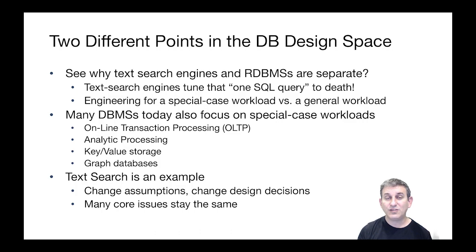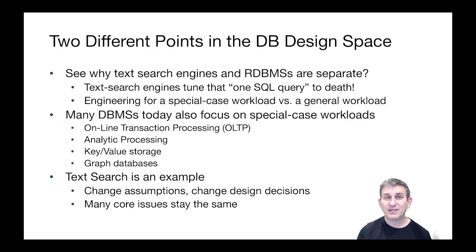Even in the relational space, it's often the case that there's not just one relational engine that does everything well. You might use one kind of relational engine for transaction processing, what's called OLTP — online transaction processing — and you might use another engine, or perhaps the same engine tuned very differently, to do analytic processing where you're running a lot of big queries. There are also different kinds of databases for things like key-value storage, where all you're going to do is put and get keys — examples include MongoDB, Cassandra, or Redis. And there are also different databases for storing and querying graphs, like Neo4j. So many database systems focus on special-case workloads. It's really not the case that there's just relational databases and text search — those are probably the two most widely used forms, but there are many other databases as well.